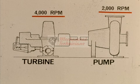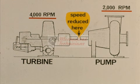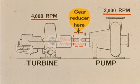Gearboxes are generally used for two basic purposes: to increase or to reduce speeds. For instance, here is a turbine that will be used to drive the pump on the right. The only problem is that the turbine operates at too high a speed to be coupled directly to the pump. This means that the driving speed of the turbine must be geared down or reduced, accomplished with a gear reducer coupled between the turbine and the pump. All that's necessary is to select a reducer that will produce the proper ratio or speed reduction.